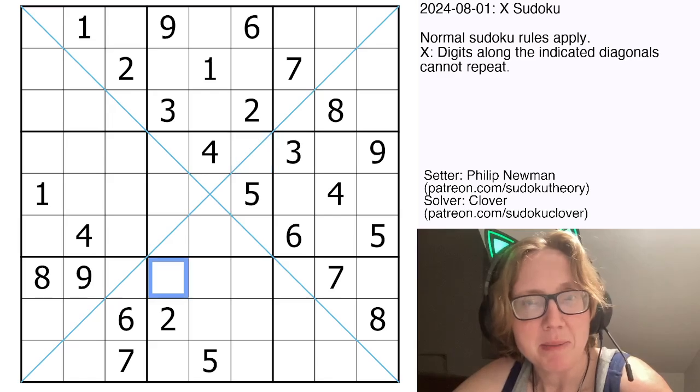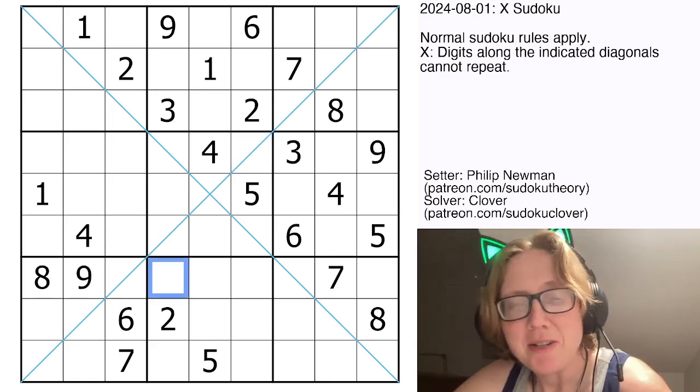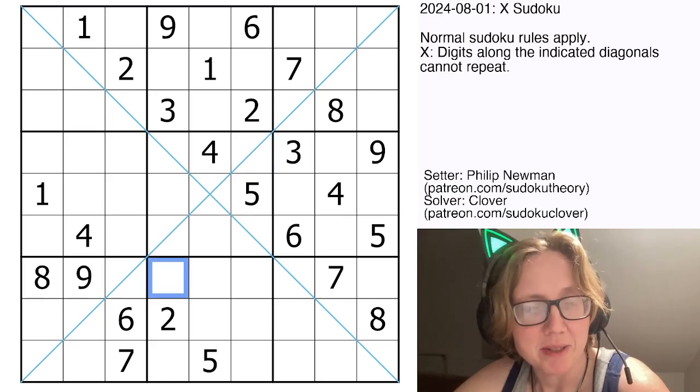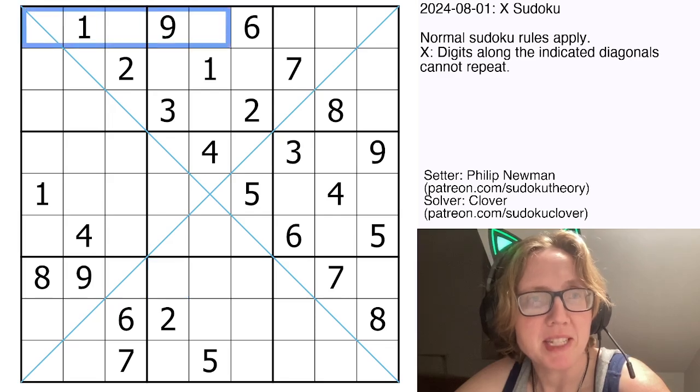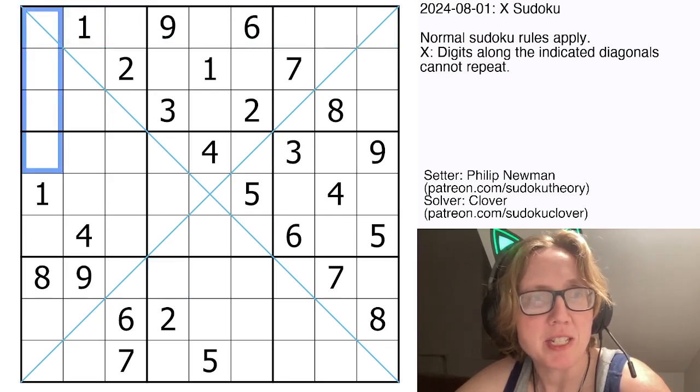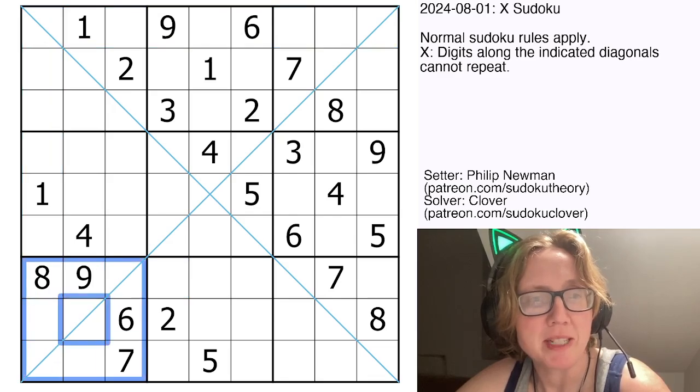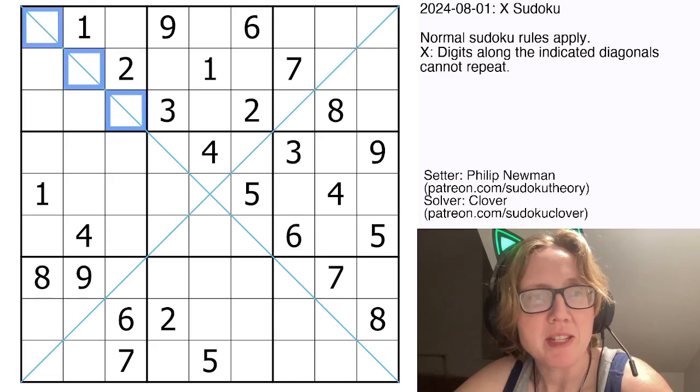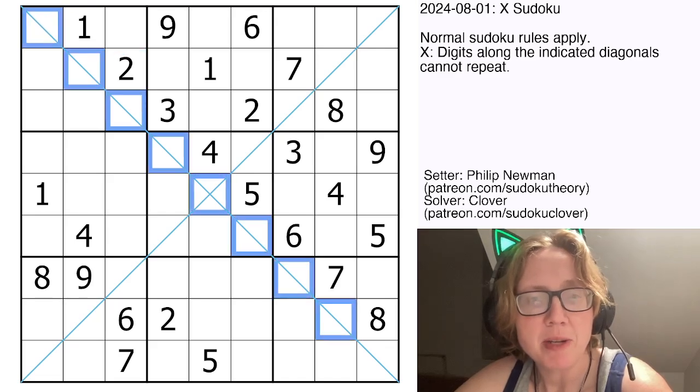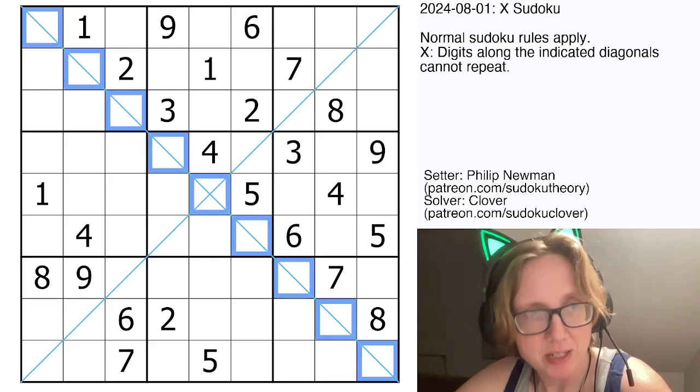So let's have a look at this puzzle. This is a Sudoku X, also known as diagonal Sudoku. The rules are standard Sudoku rules, so placing the digits 1 through 9 once each in each row, each column, and each outlined 3x3 region, and then also along each of these marked blue diagonals we also have the digits 1 through 9 exactly once each.